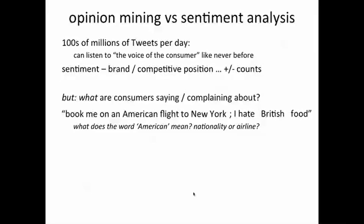Suppose the writer also said 'I hate British food.' Maybe the guess is now it's probably American Airlines, because British Airways is also another airline and maybe they're talking about the food on British Airways. But suppose the comment was 'I hate English food.' Suddenly you've changed your decision and now you think he's referring to any American carrier, not just American Airlines. Because 'American' versus 'English' clearly distinguishes nationality, whereas 'American' versus 'British' suggests he's more likely talking about the carriers themselves.